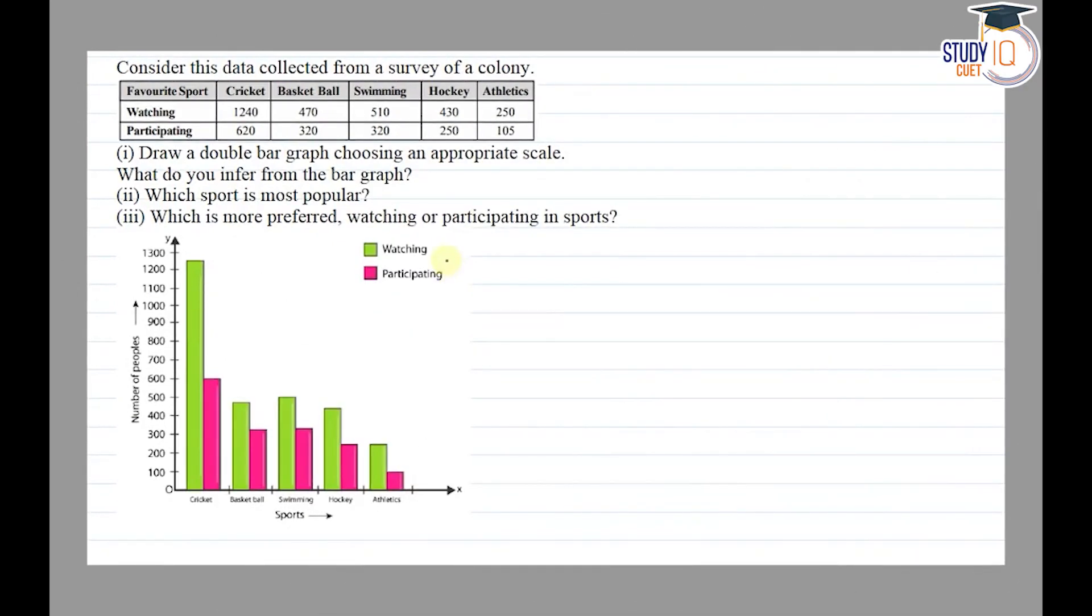Hello everyone, this question appears in Class 7th NCERT chapter of data handling. This is the fifth question of exercise 3.3. The question says consider this data collected from a survey of a colony. The data is given in a table form.